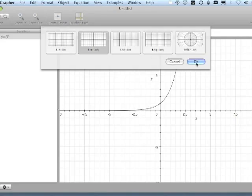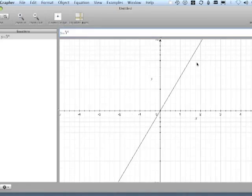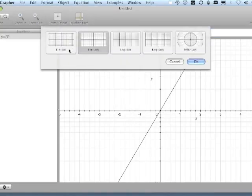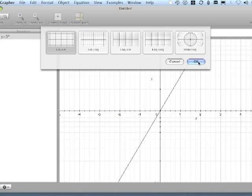Now, the result should be a straight line, and it is. To change back again, Format, Coordinate System, Linear, Linear, okay.